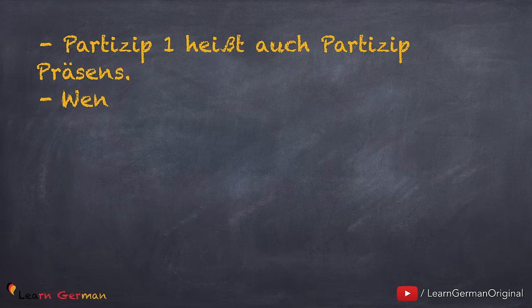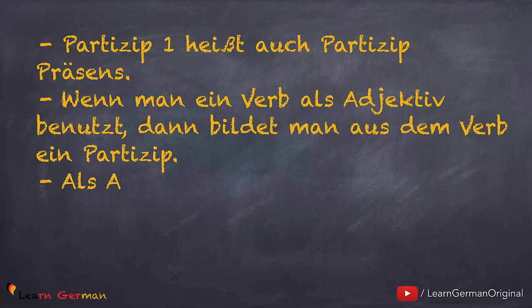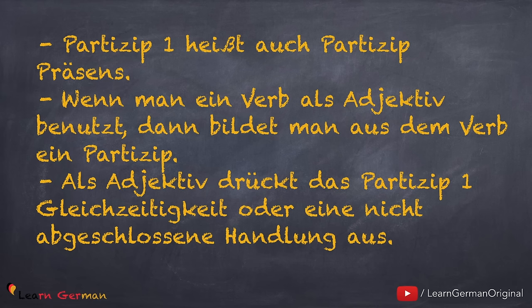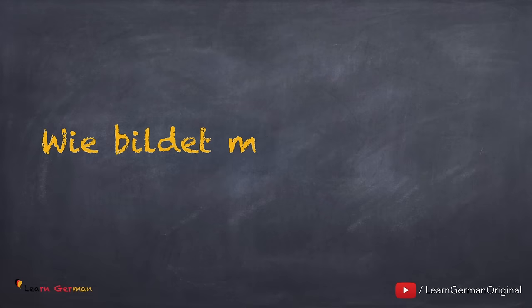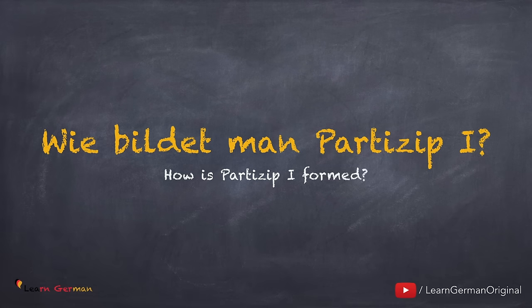Partizip 1 heißt auch Partizipresens. Wenn man ein Verb als Adjektiv benutzt, dann bildet man aus dem Verb ein Partizip. Als Adjektiv drückt das Partizip 1 Gleichzeitigkeit oder eine nicht abgeschlossene Handlung aus. Wir schauen uns gleich ein paar Beispiele an, um dies besser zu verstehen. Aber erst mal die Frage: wie bildet man Partizip 1?